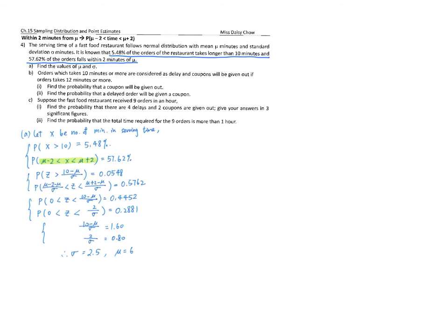Part B: Orders which take 10 minutes or more are considered as delayed, and coupons will be given out if orders take 12 minutes or more. Take ten seconds to understand what these two sentences mean. I think it should be quite simple - greater than or equal to 10 minutes is called delay, greater than or equal to 12 you get a coupon.